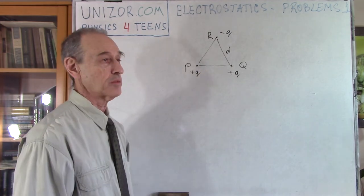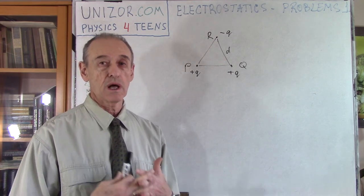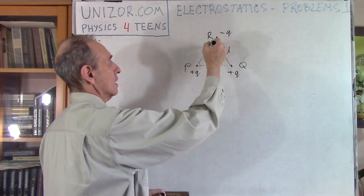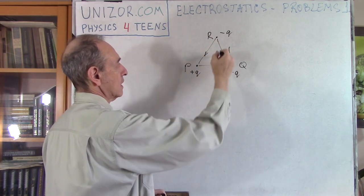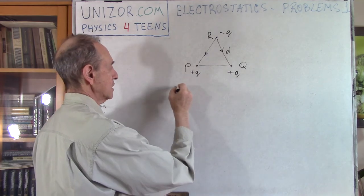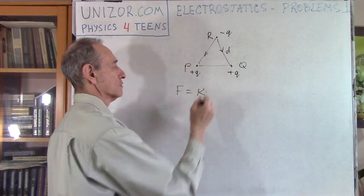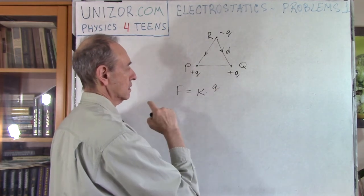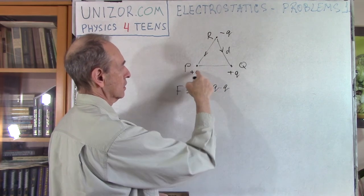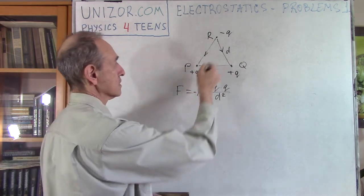It's a very simple problem — it basically includes only Coulomb's law and the law of addition of vectors representing the forces. We have two forces of attraction: one from P going this way, and another from Q going this way. They are of the same magnitude, and the magnitude of each force is K times Q times minus Q — so K Q squared — divided by D squared, which is the square of the distance between them. So this is one force and this is another force.